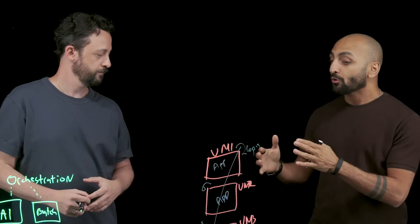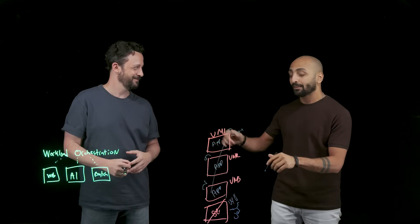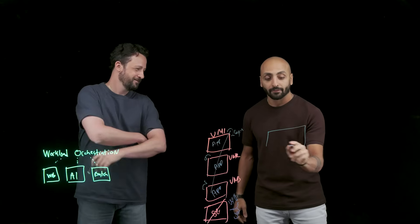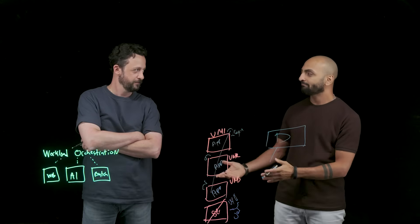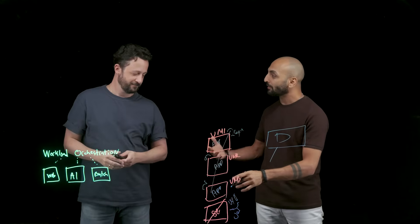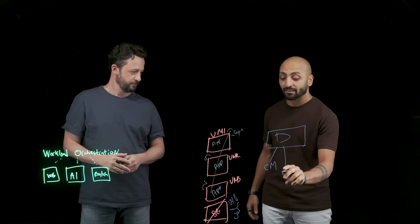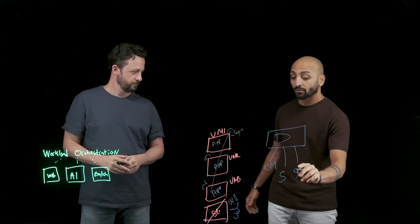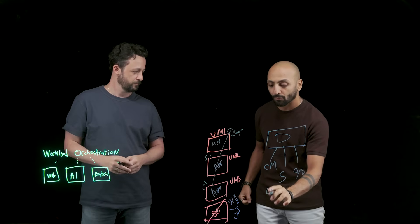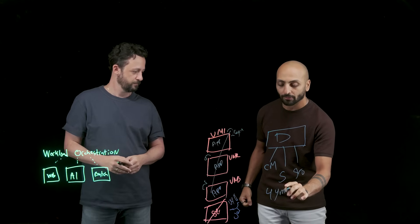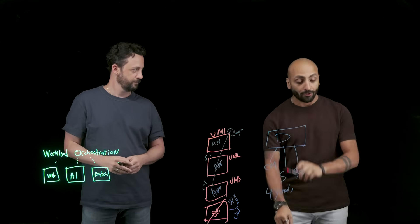Kubernetes is an amazing tool, there's no doubt about it, but let's think about it. If you have a deployment, does a deployment come by itself? No. It comes with a lot of components — a config map, a secret, storage. How many YAMLs are we talking about? We're talking about four configured YAMLs.